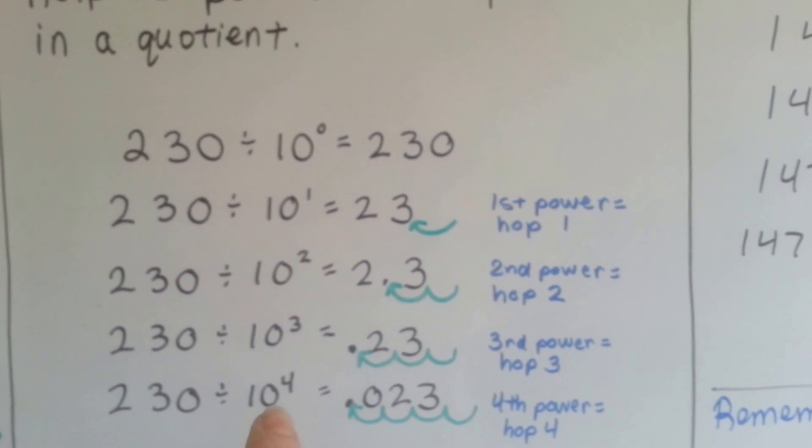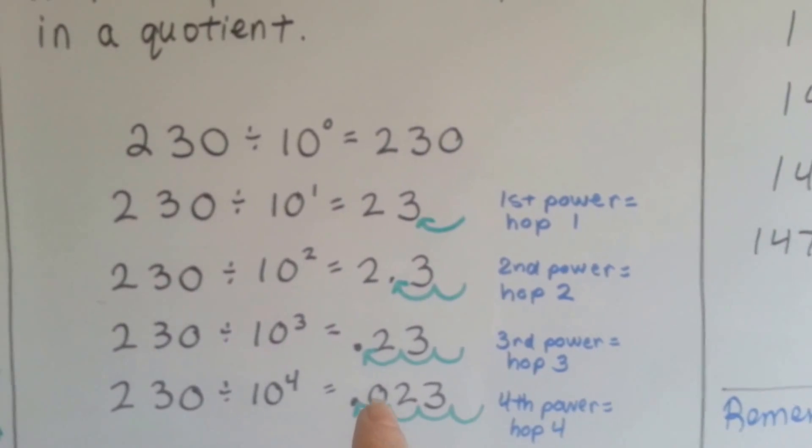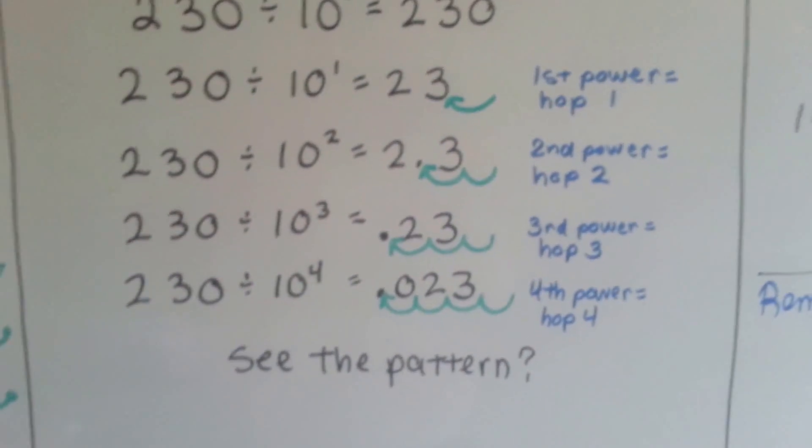And 230 divided by 10 to the fourth power is going to jump four times, and now we had to put a 0 as a placeholder there, didn't we? Do you see the pattern?